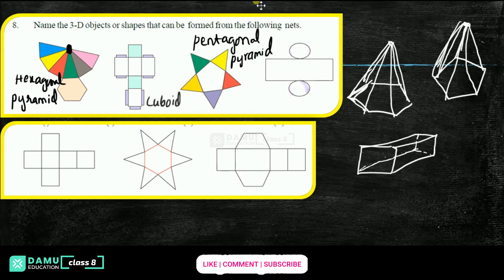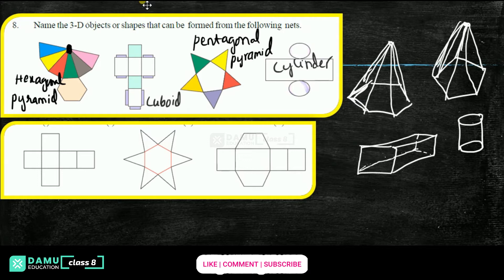Our next one: you'll get a cylinder. How will we get this cylinder? We'll have it like a rolled strip — that forms the cylinder. Next one after cylinder, you'll get a cube. For a cube, normally all the faces will be equal.